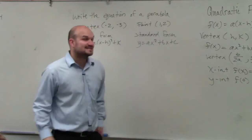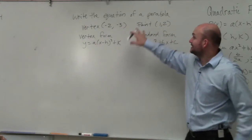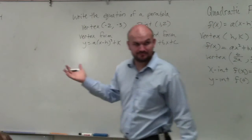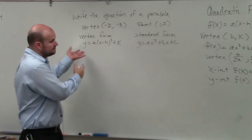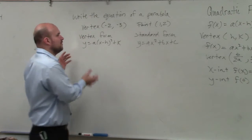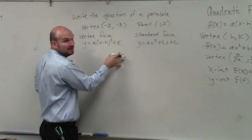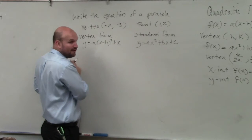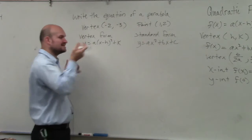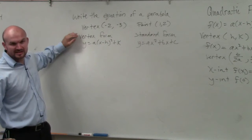So they're asking us to write the equation of the parabola given a vertex and a point. We've got to determine which formula to use. Both of these are a parabola — they're just in different formats. But if we're given a vertex, do you guys kind of see where it might make sense to use vertex form?